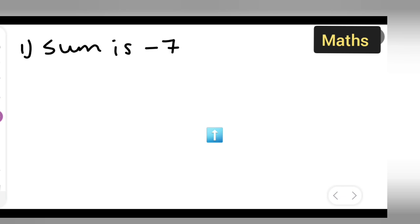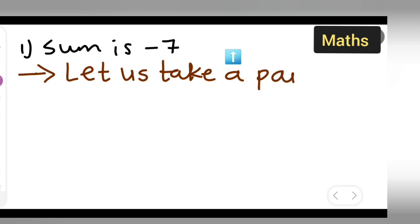Let us write down. First, you can take down the sum is -7, which means how you are exactly going to start. Let us take a pair of integers.